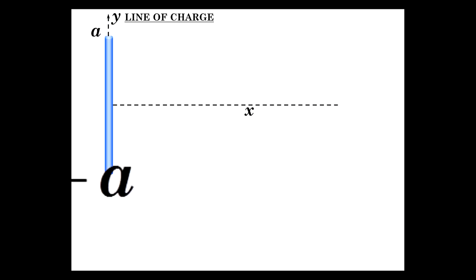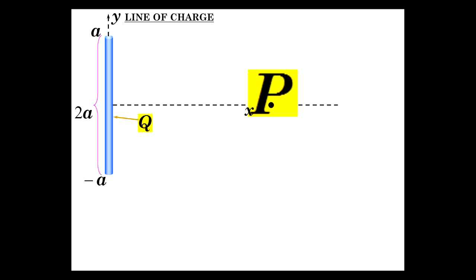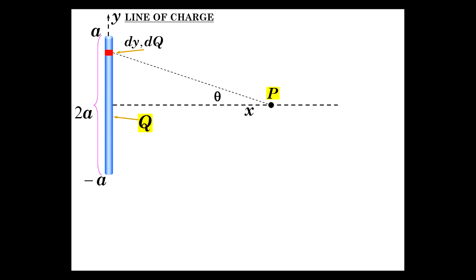Let's now pick up the analysis of a finite line of charge. Here's our charge line, and its extent from the x-axis is between plus and minus a. So it's 2a in length, total charge is Q, and we're going to figure out the electric field at point P. We start with a differential charge dQ across length dy. We extend a line down to the point — this is the length from that differential charge, which acts as a point charge.